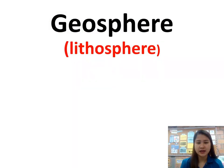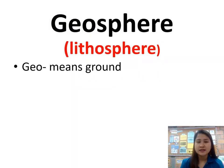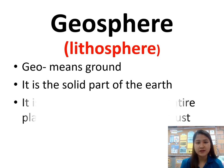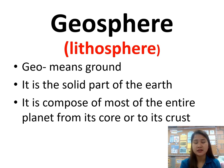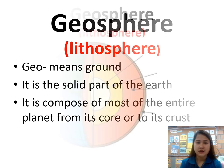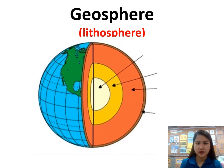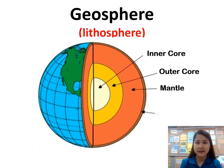Next is the geosphere, or the lithosphere. Geo comes from the Greek word meaning ground. It is the solid part of the Earth, composed of most of the entire planet from its core to its crust. It is important to note that the geosphere only includes the solid, non-living parts of the Earth. As part of the geosphere, we have the lithosphere, or the layers of the Earth: first the inner core, followed by the outer core, next is the mantle, and the last is the crust.